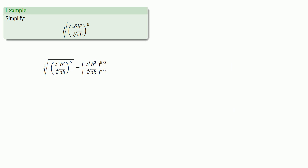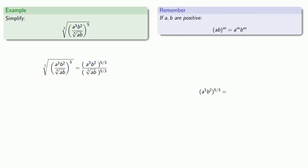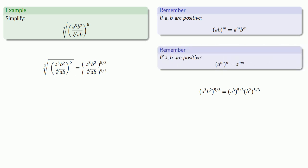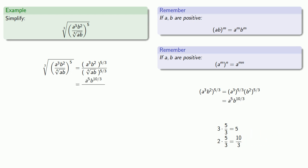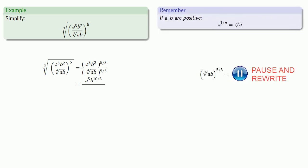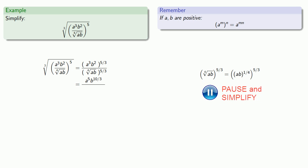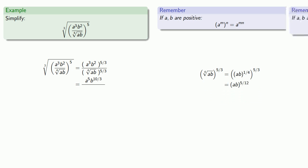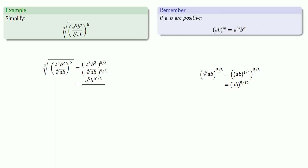In the numerator we have a product raised to the five-thirds power, so we raise each individual factor to the five-thirds. We have a power of a power, so we multiply the exponents: three times five-thirds and two times five-thirds, which requires some fraction arithmetic. The numerator then simplifies. For the denominator, since it contains a root, we rewrite it as an exponent. It's a power of a power, so we multiply the two exponents. Then it's a power of a product, so we apply the exponent to both individual factors to get the simplified denominator.